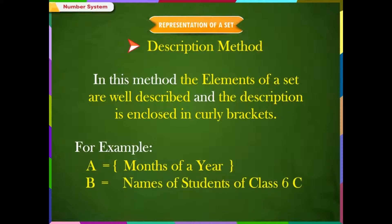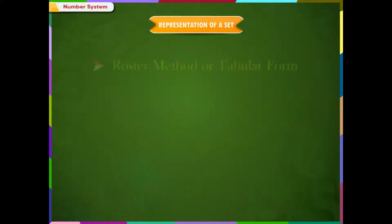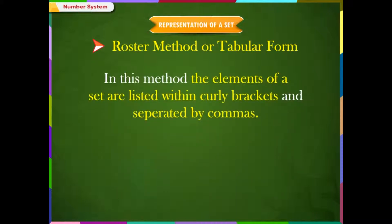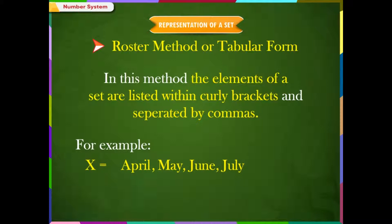B is equal to the names of students of class 6C in curly brackets. Roaster method or tabular form: in this method, the elements of a set are listed within curly brackets and separated by commas. For example, X is equal to {April, May, June, July}. Y is equal to {2, 4, 6, 8, 10}.